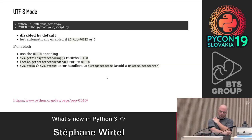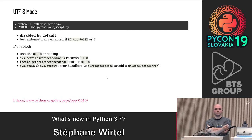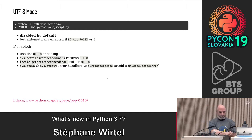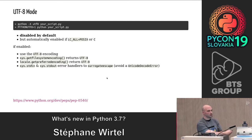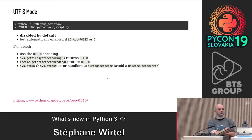UTF-8 mode is useful in some cases. For us the use case was Docker, because sometimes we don't specify the UTF-8 encoding and by default it's disabled. We can enable it if LC_ALL is set to POSIX — the default behavior of a Docker image. With the UTF-8 mode flag, everything will be in UTF-8 and we override the default encoding of Python. This is also the case with Python on Windows, which doesn't use UTF-8 by default.